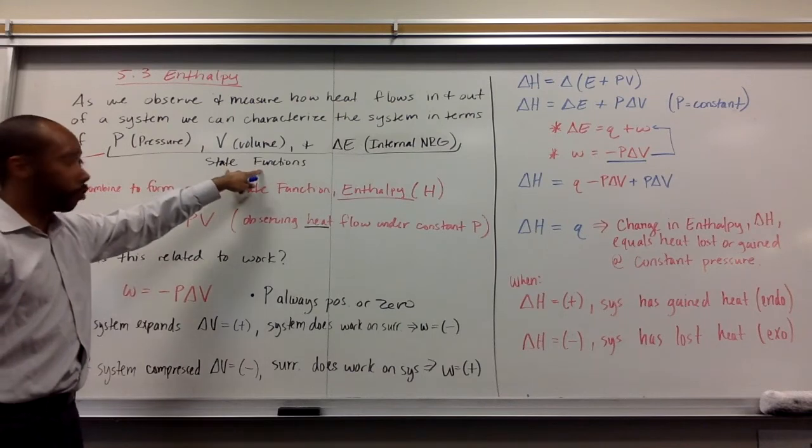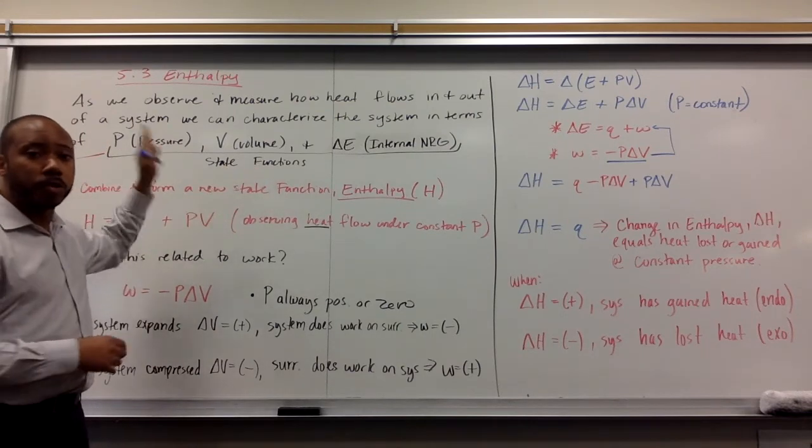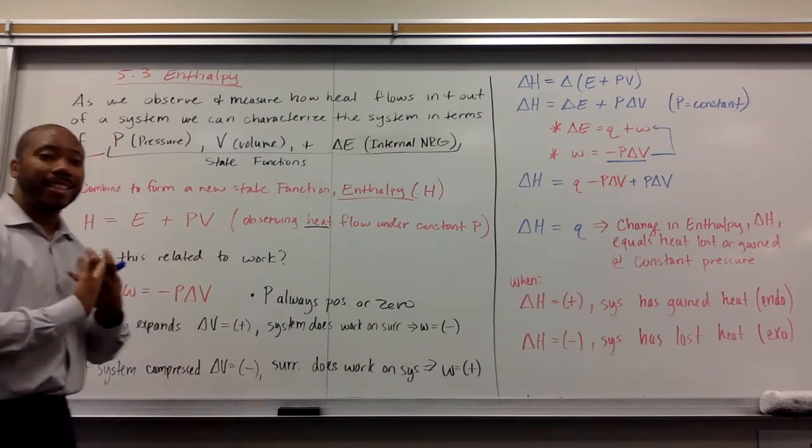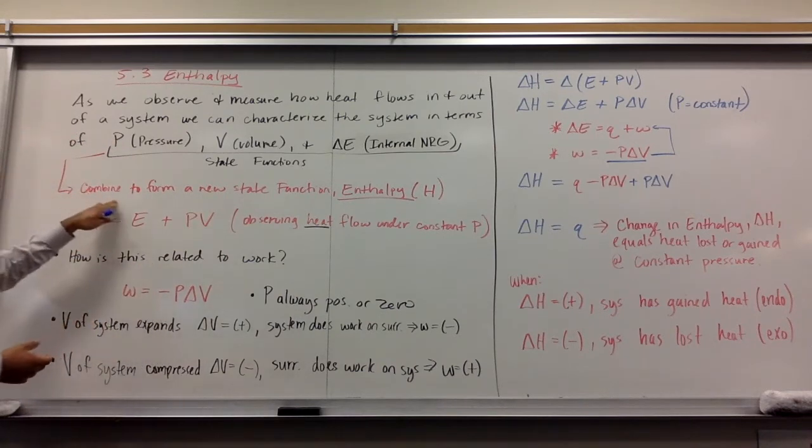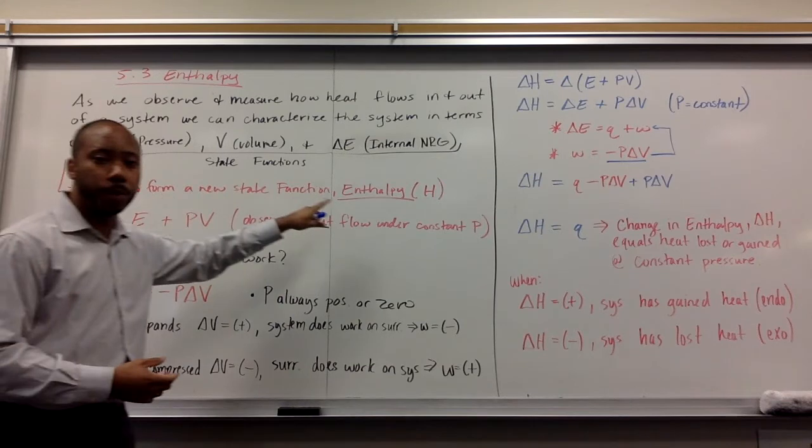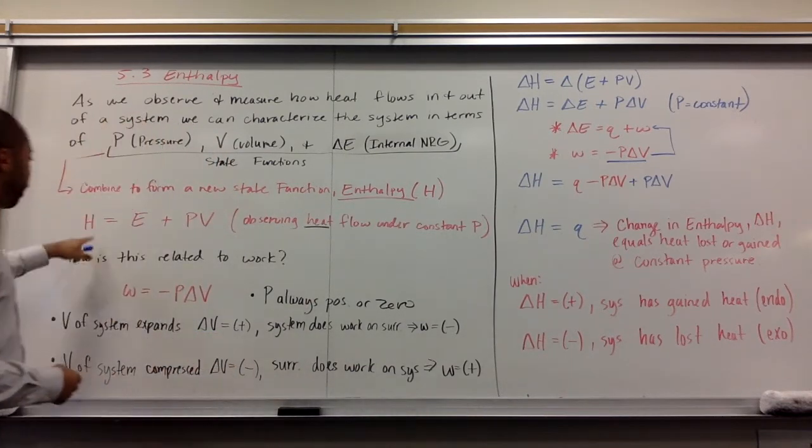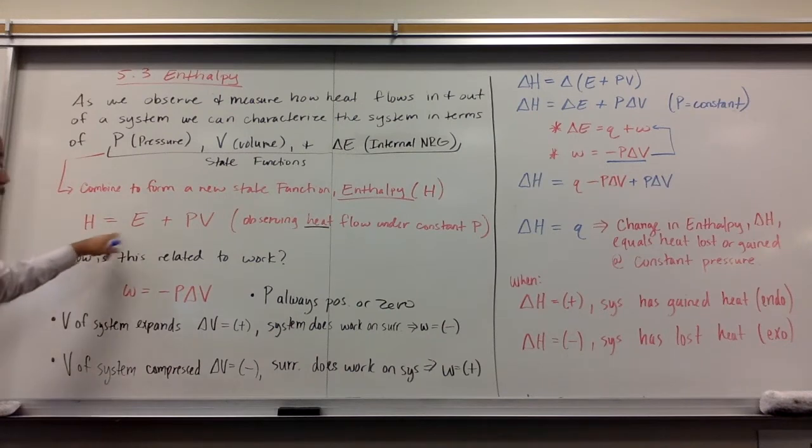These three things are state functions. When we combine pressure, volume, and internal energy together in a certain mathematical way, we can then form a new state function called enthalpy given by letter H. Enthalpy H is equal to your internal energy plus your pressure times your volume.